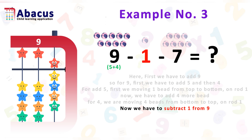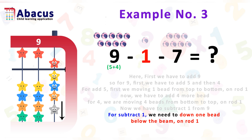Now we subtract 1 from 9. On the bottom of rod 1 we have 4 beads, so we can easily subtract 1. We move 1 bead from the top down on rod 1. Now we have 8 and need to subtract 7.